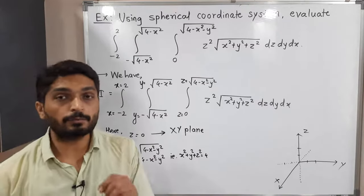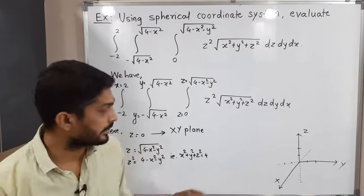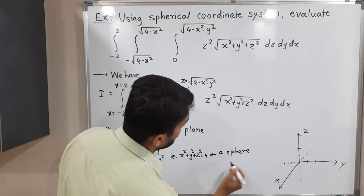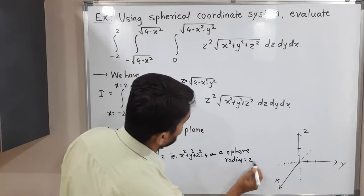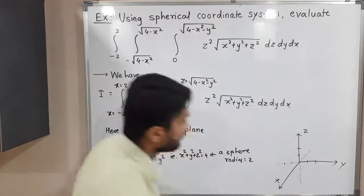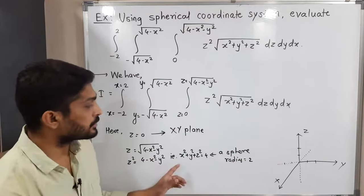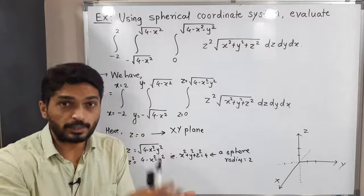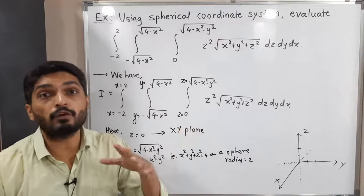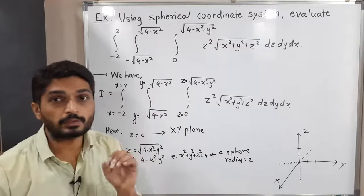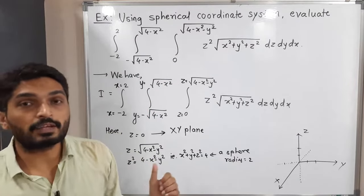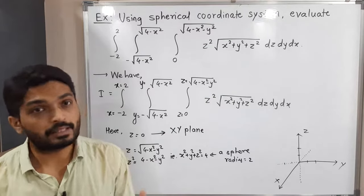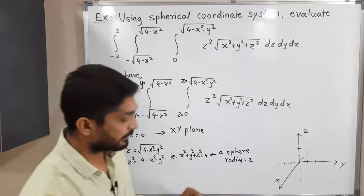This is the equation of a sphere — a standard sphere with center (0, 0, 0) and radius two, since four is the square of two. So we have a sphere with radius two and center (0, 0, 0). The region is bounded by the sphere as well as the XY plane. Since we have a positive square root here, we should consider the upper half of the sphere. If we had a negative square root, we would consider the lower half.